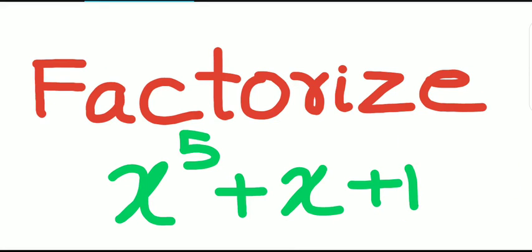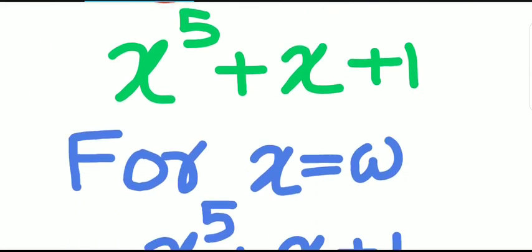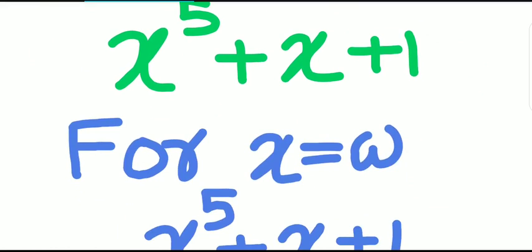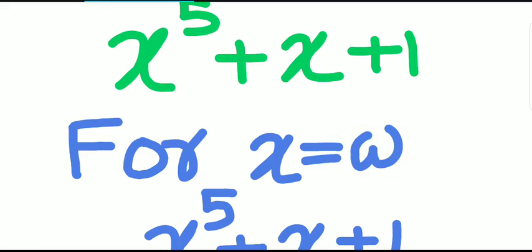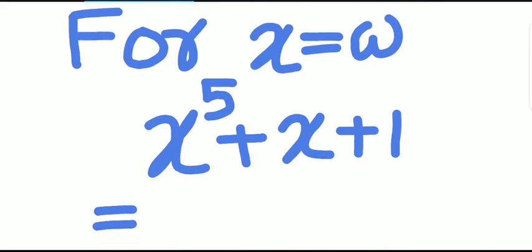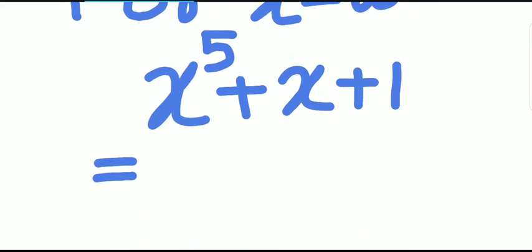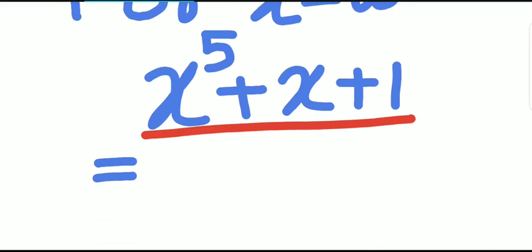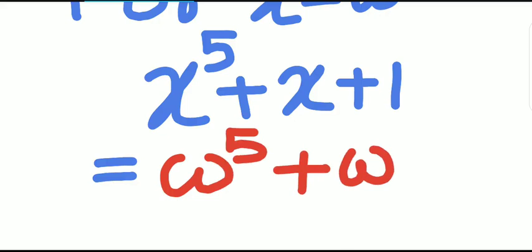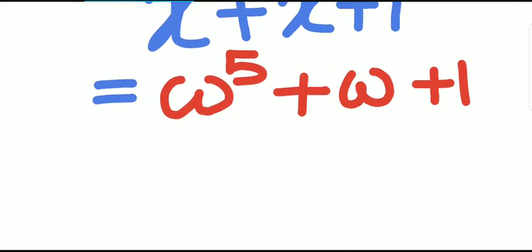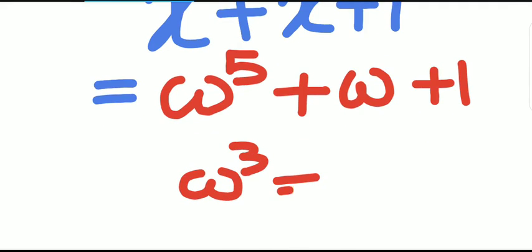So what factor do we have? Observe that if we take x equal to ω, where ω is the complex cube root of unity. So the expression x to the power 5 plus x plus 1 can be written as ω to the power 5 plus ω plus 1. But ω being a complex cube root of unity, we know that ω cubed equals 1.